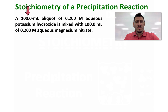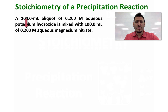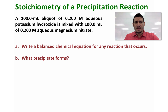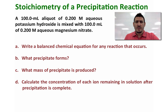We have a 100 milliliter aliquot of 0.200 molar aqueous solution of potassium hydroxide mixed with 100 milliliter of 0.200 molar aqueous solution of magnesium nitrate. The questions we're going to discuss are: a) Write a balanced chemical equation for any reaction that occurs. b) What precipitate forms? c) What mass of precipitate is produced? And d) Calculate the concentration of each ion remaining in solution after precipitation is complete.